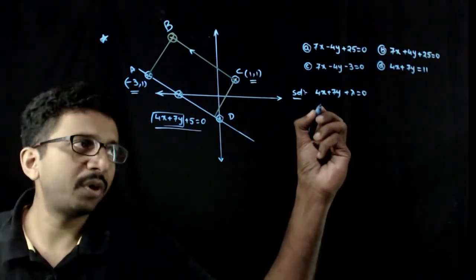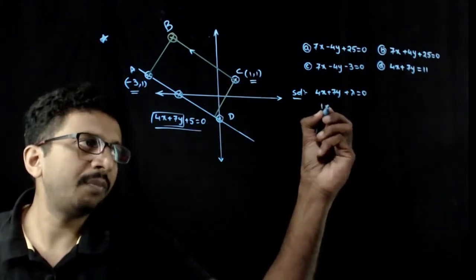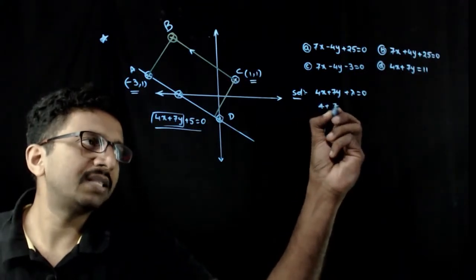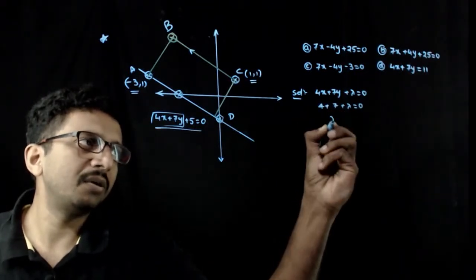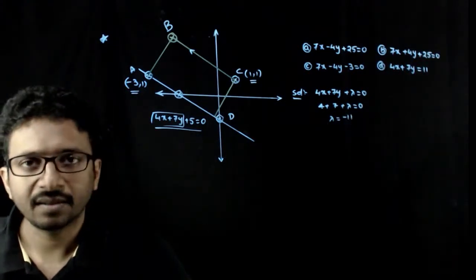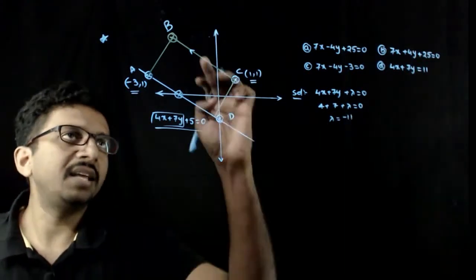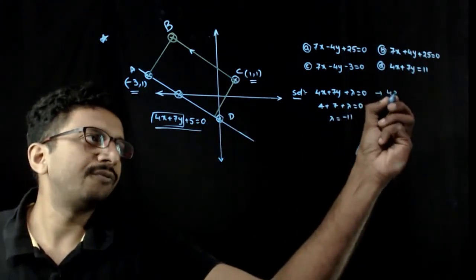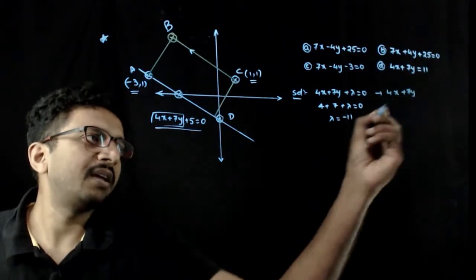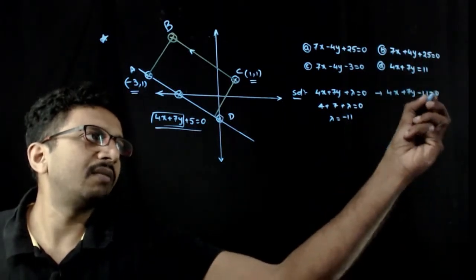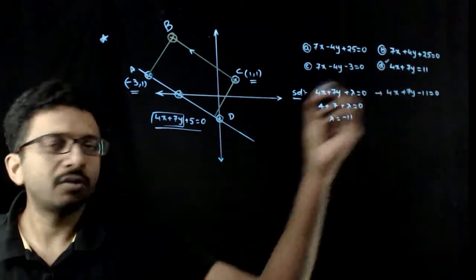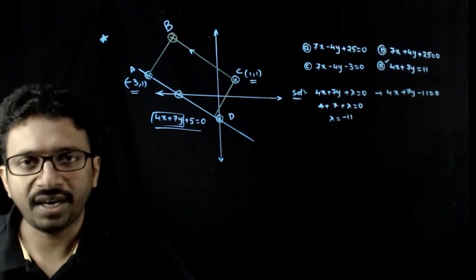Let us satisfy this point: 1×4, that is 4, plus 7, plus λ = 0. So λ = -11. Hence the equation of BC is 4x + 7y - 11 = 0, that is 4x + 7y = 11. So option D is one of the right answers.